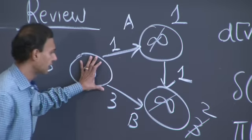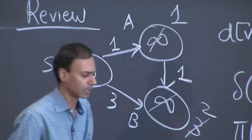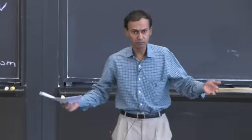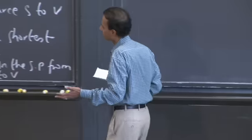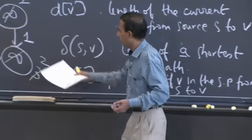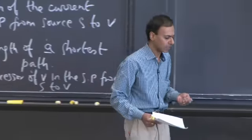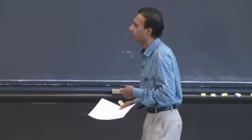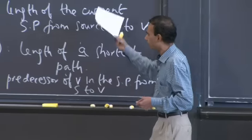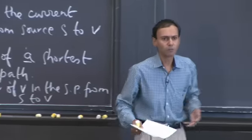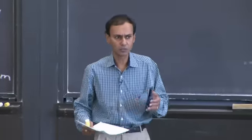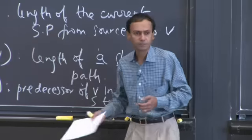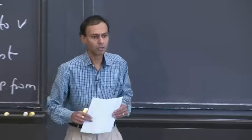We have to prove that any particular algorithm will converge to the delta values and that the algorithm will terminate. Then we have to worry about asymptotic complexity. We'll look at two special-case algorithms today: one for DAGs and one for non-negative edges. Any questions about this material?